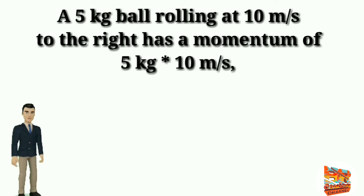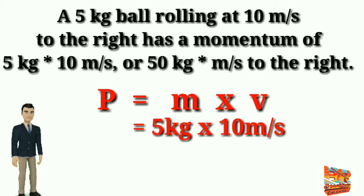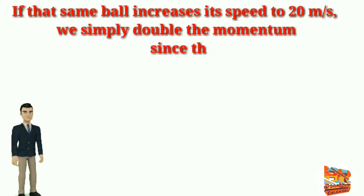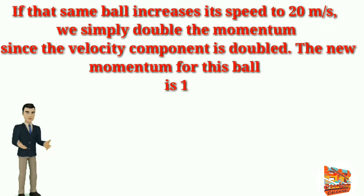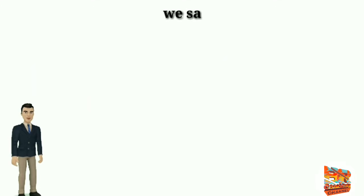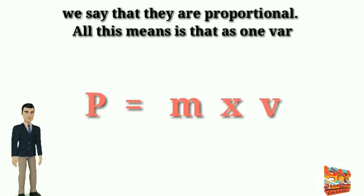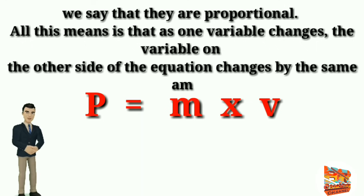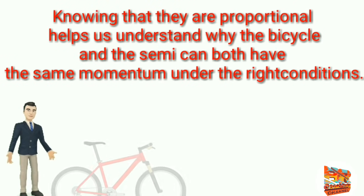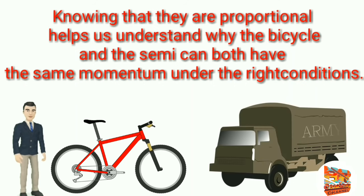A 5 kilogram ball rolling at 10 meters per second to the right has a momentum of 5 kilograms times 10 meters per second, or 50 kilogram meters per second to the right. If that same ball increases its speed to 20 meters per second, we simply double the momentum since the velocity component is doubled. The new momentum for this ball is 100 kilogram meters per second because the momentum increases or decreases by the same amount as either the mass or velocity. We say that they are proportional. All this means is that as one variable changes, the variable on the other side of the equation changes by the same amount. Knowing that they are proportional helps us understand why the bicycle and the truck can both have the same momentum under the right conditions.